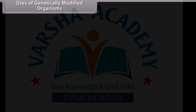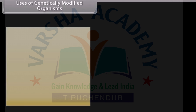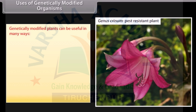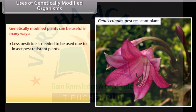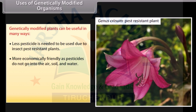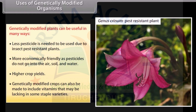Genetically modified plants can be useful in many ways. They are more environmentally friendly as pesticides do not go into the air, soil, and water. They offer higher crop yields, and genetically modified crops can also be made to include vitamins that may be lacking in some staple varieties.